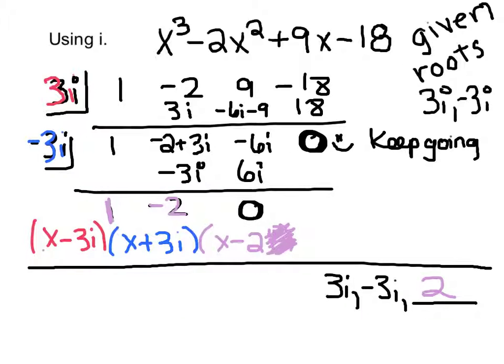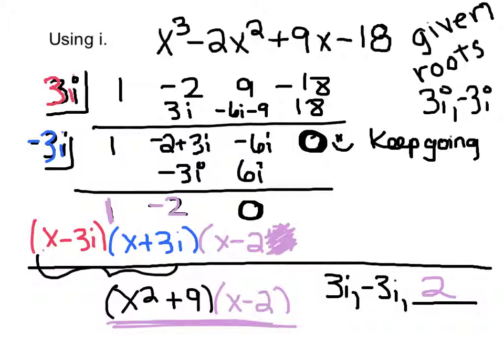But if you were to write the equation in factored form, these two pieces right here multiply out to be x² + 9. And then this piece right here is x - 2. So here's your factored form, here's all of your zeros.